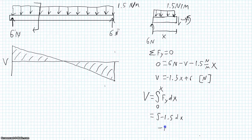And so our answer is going to be our shear is going to be negative 1.5x plus c. Where this constant of integration is determined by our boundary condition on the left hand side of the beam. In this case, at x equals 0, our shear is 6 newtons. And so our c is 6 newtons.